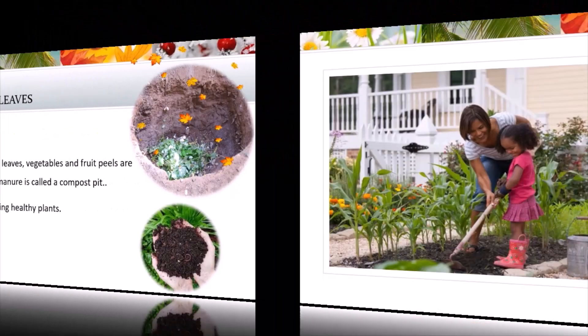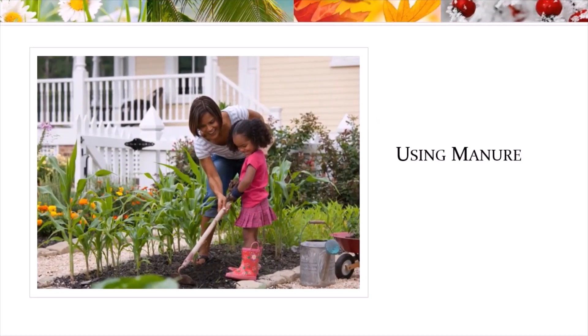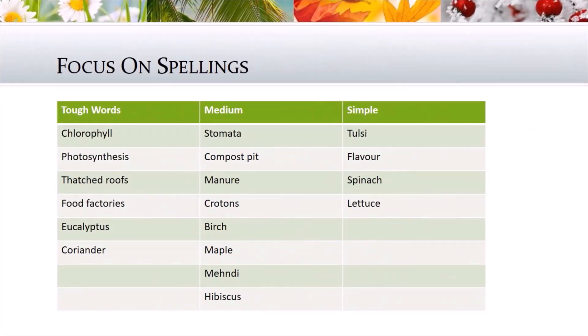This manure, when used with soil, helps in growing healthy plants — it adds more nutrition to the soil, which in turn helps grow healthy plants. The vegetables and plants we get will also be healthy. At the end of the chapter, a few words are listed categorized as tough, medium, and simple words. Please focus on the spellings of these words and practice very well.